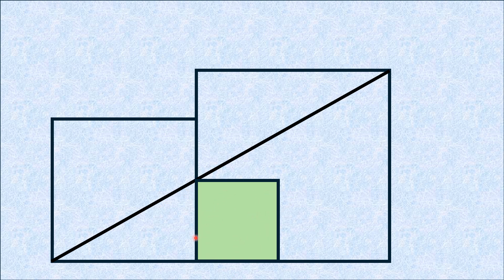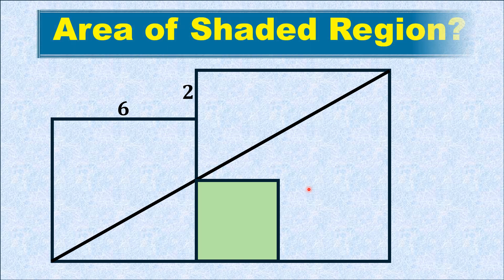Moreover, the green square shares one side with both the smaller and larger squares. If the side length of one square is 6 and a particular distance is 2, we need to find the area of the green shaded square.